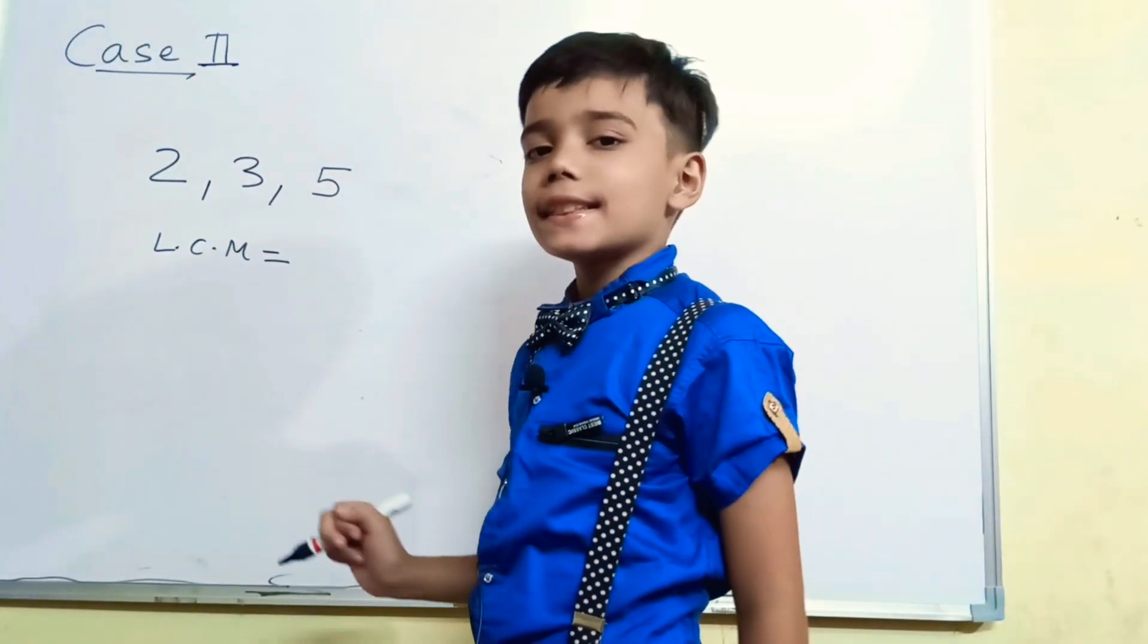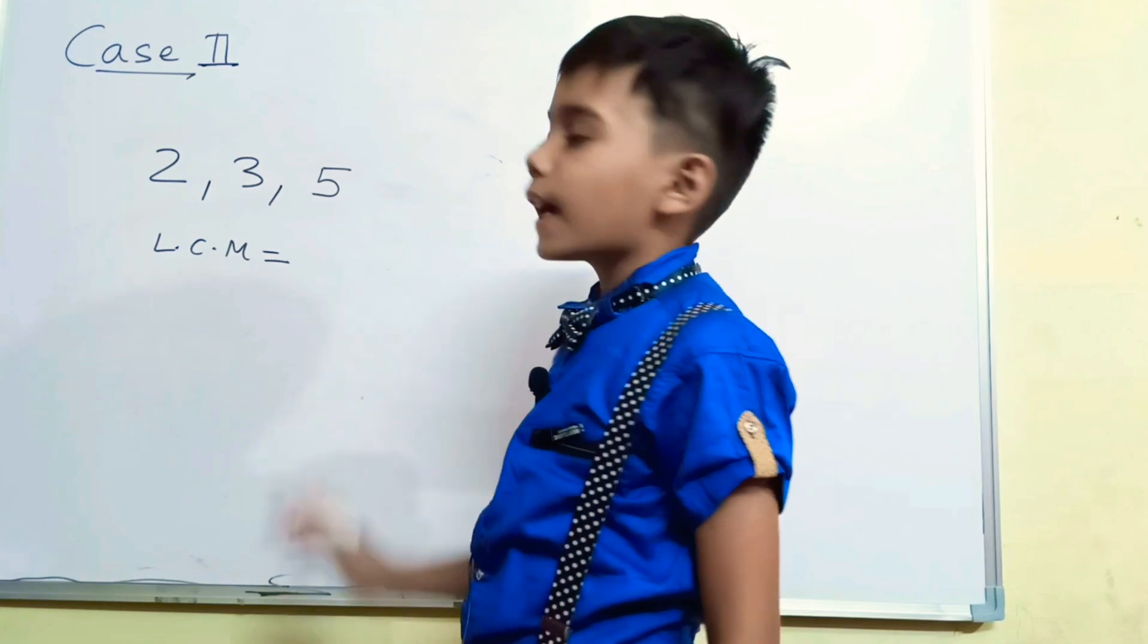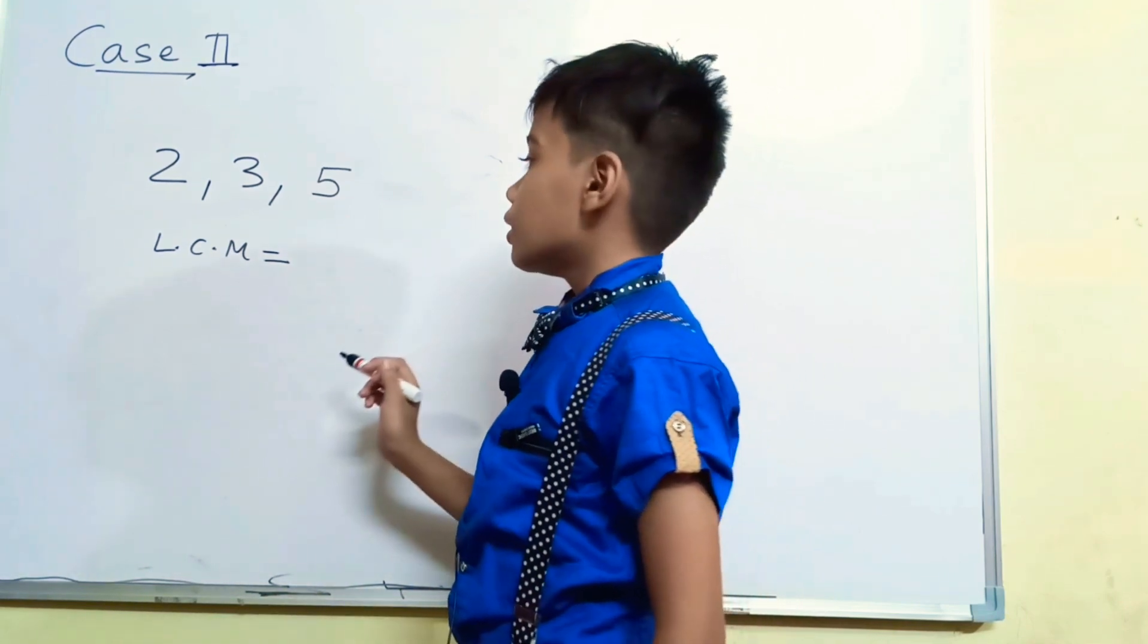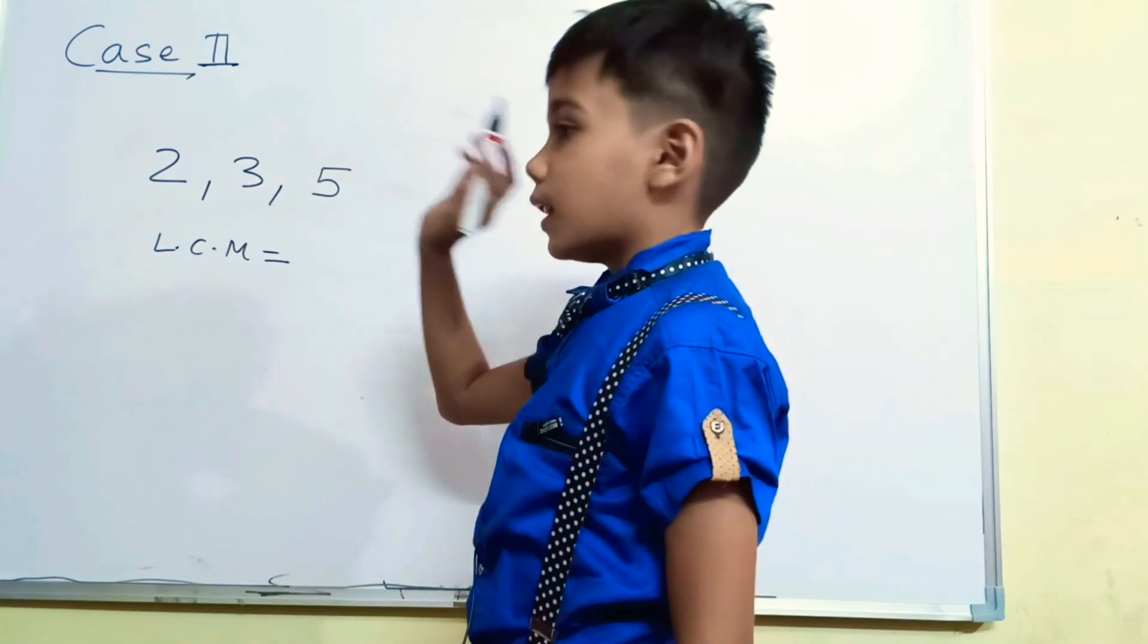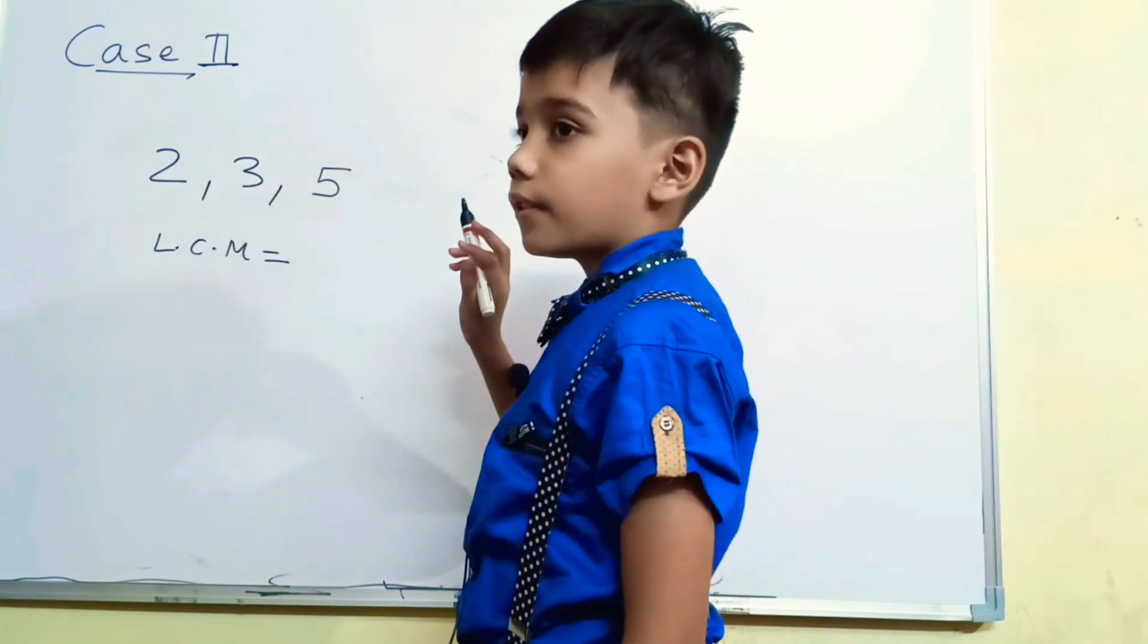Now see second case. Suppose we are having 2, 3 and 5. These all are co-prime numbers. So the LCM is the multiplication of all of these numbers. 2 into 3 into 5. Answer is 30.